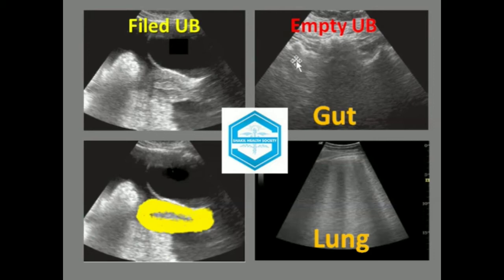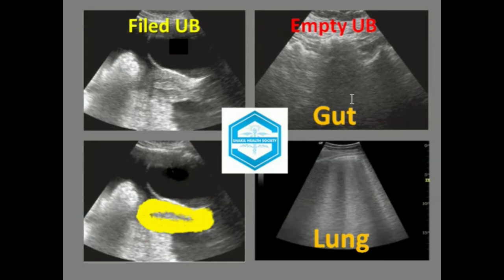This is the image of the pelvis with an empty urinary bladder. The gut contains gases and therefore the organs behind are not visualized. This is the lung image — as we know, the lungs are filled with air and therefore the deeper organs cannot be visualized.